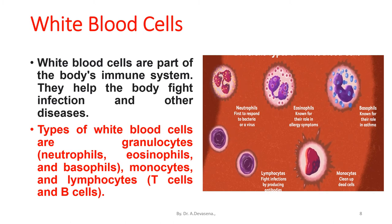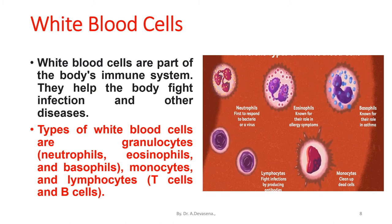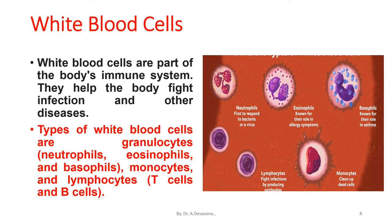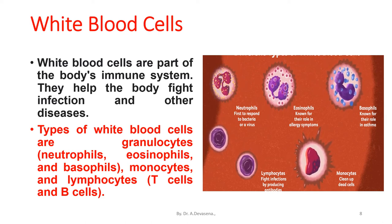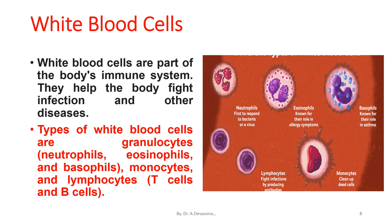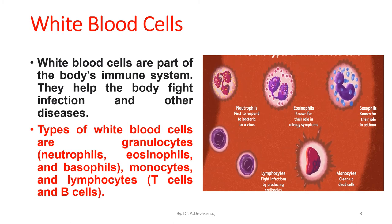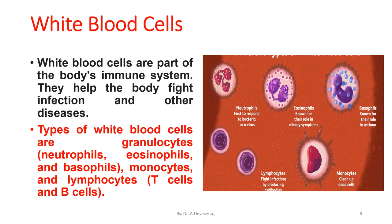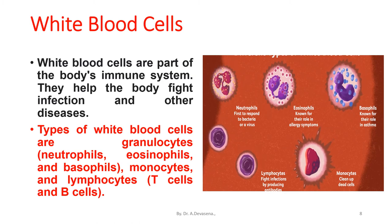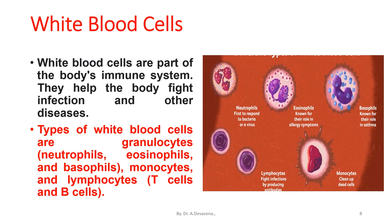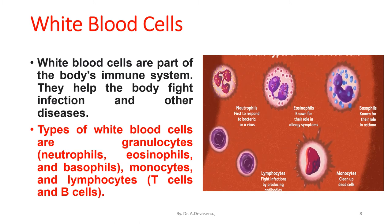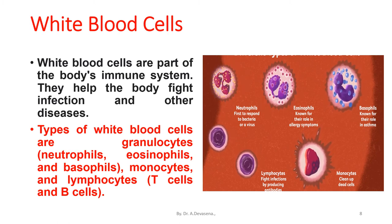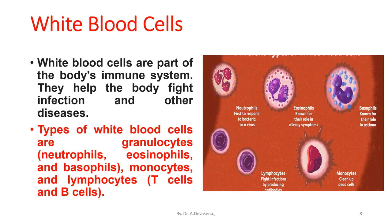Neutrophils first respond to bacteria or a virus. Eosinophils are known for their role in allergy symptoms. Basophils are known for their role in asthma. Lymphocytes fight infections by producing antibodies. Monocytes clean up dead cells.